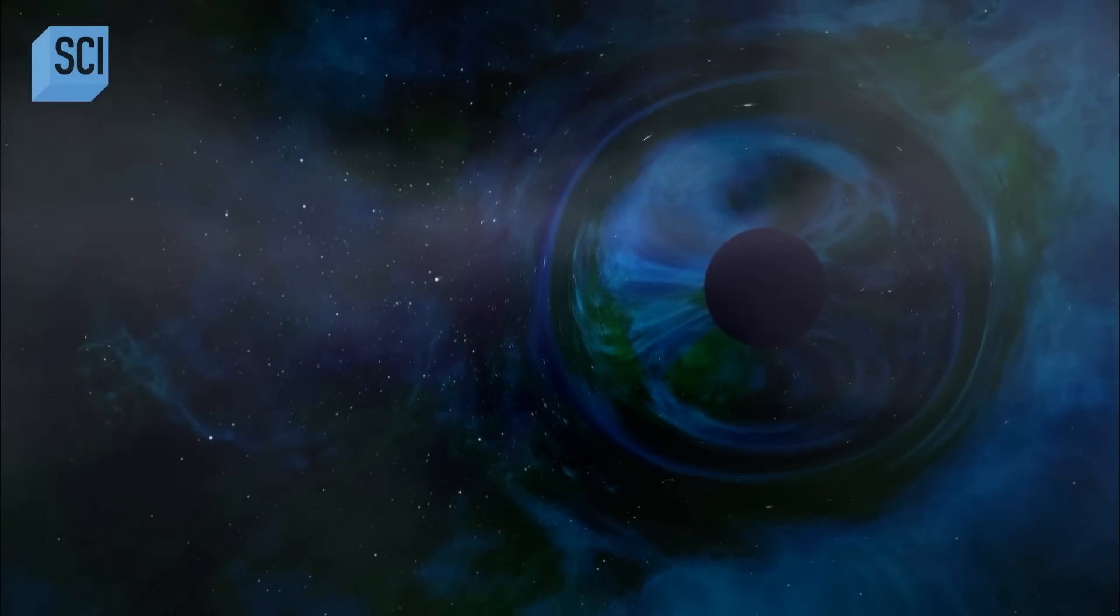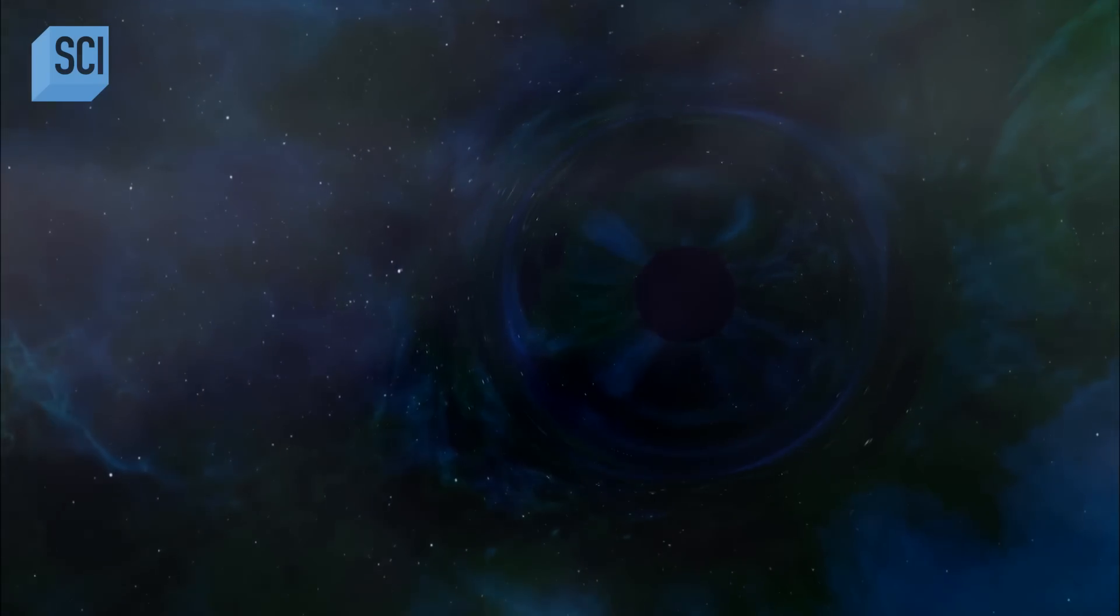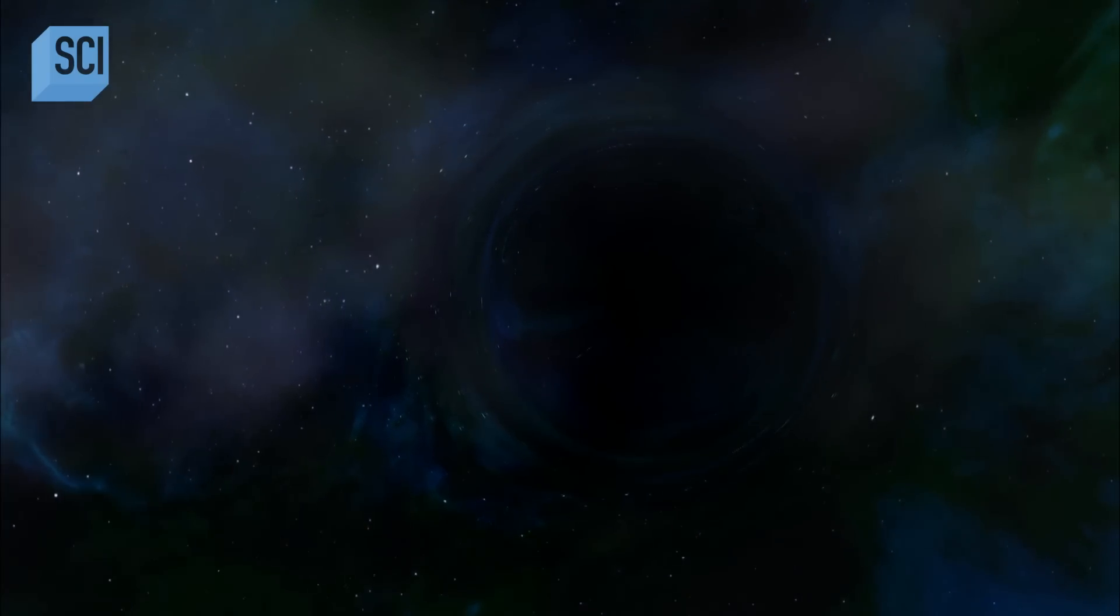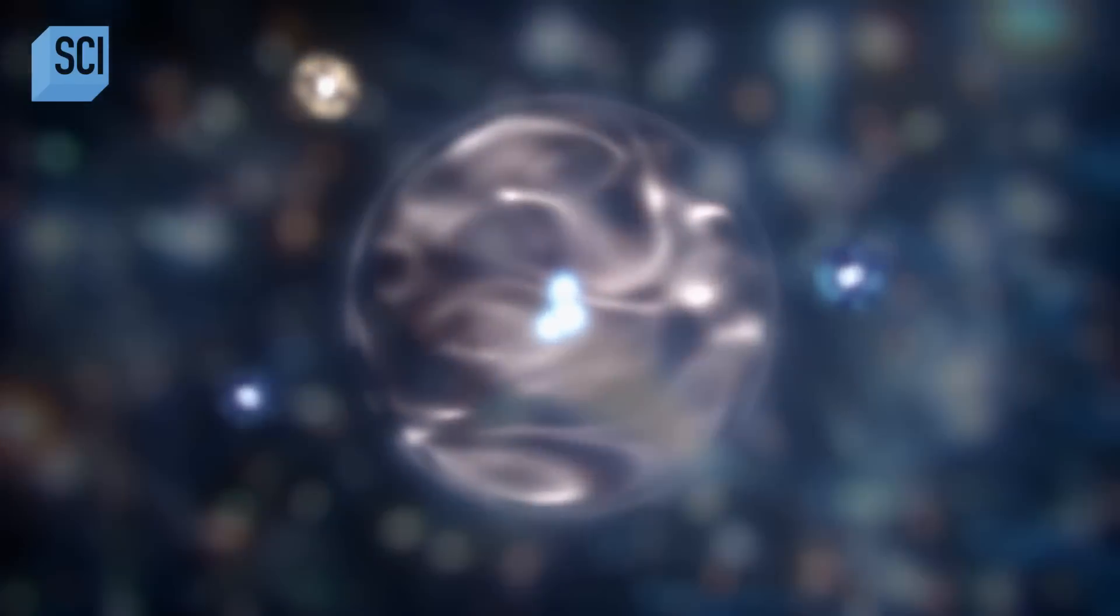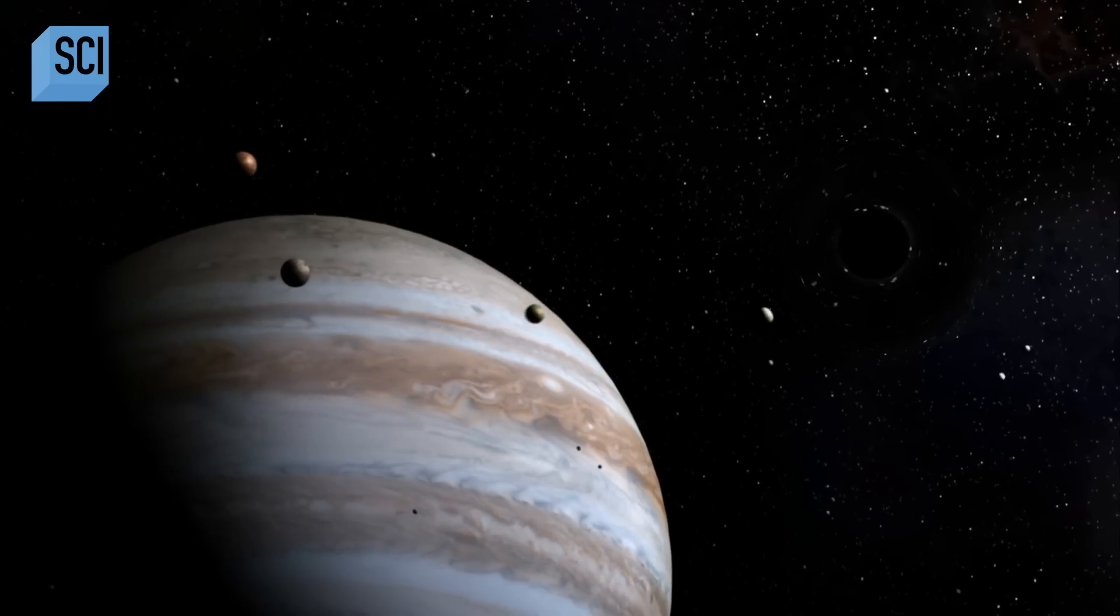But how can scientists claim that black holes exist if we can't even see them? You could say that about the existence of the atom. We knew they existed for decades, centuries before we had actually seen one in some sort of imaging device. Just because you can't see it doesn't mean it's not there. It's like we know that wind is there even though we can't see air.